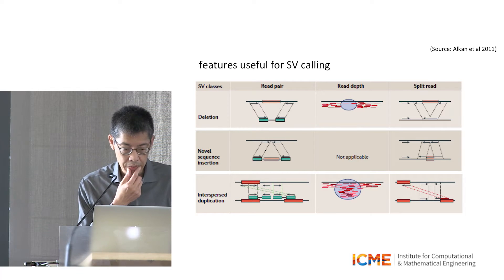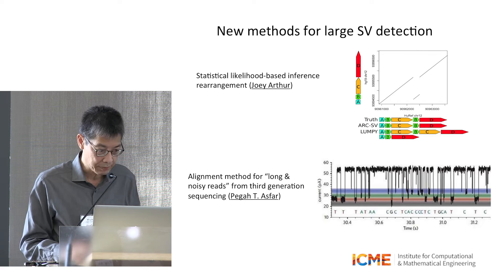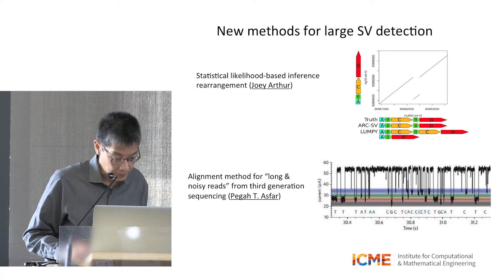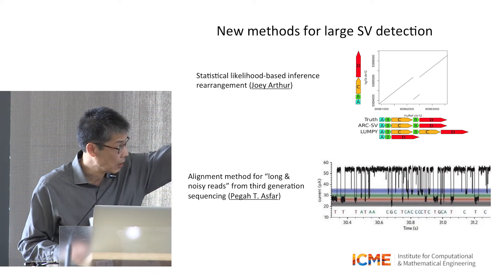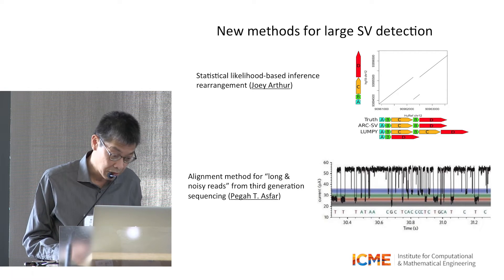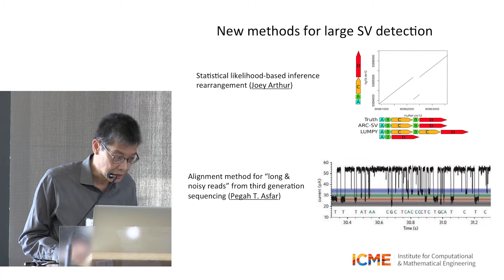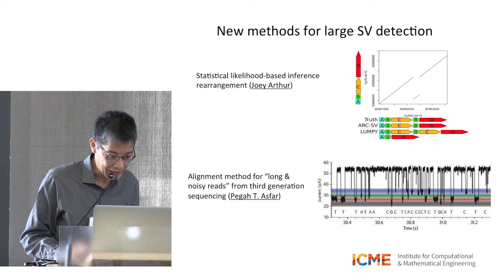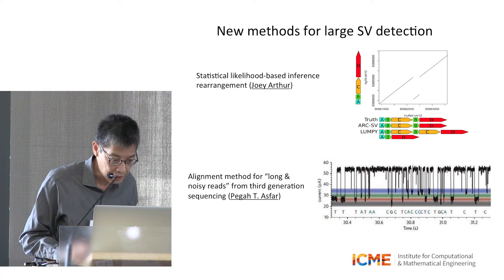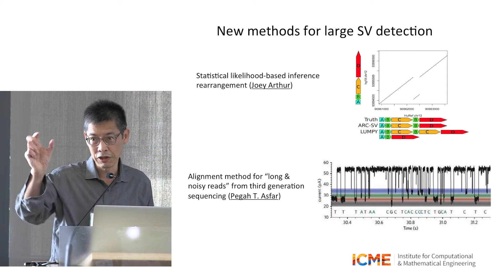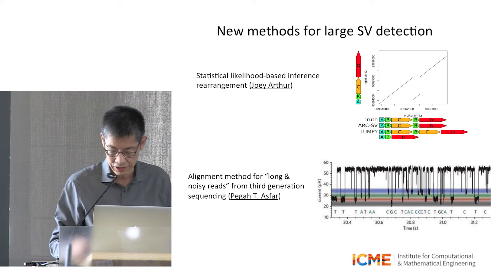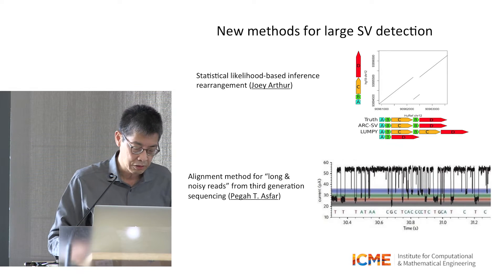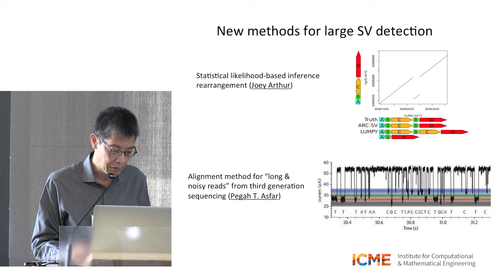Part of our lab's effort is to find better methods to call these larger structural variants. Here I show you an example where our method — the ARCSV method — gives a much better reconstruction of complex structural variants. You can see that block B in the reference genome is duplicated and inserted in another position. In the ground truth, there's an extra block B, and sometimes it's inserted and reversed in direction — so it can be very complicated. Joey Arthur, a PhD student in statistics, has created a complex likelihood model that allows us to figure out these rearrangements from short reads.